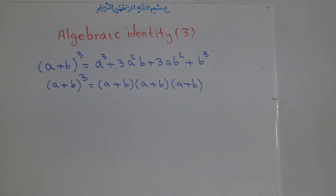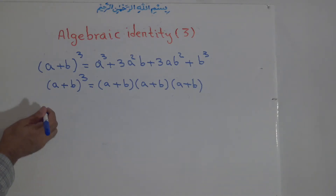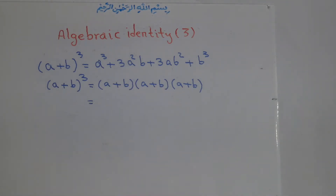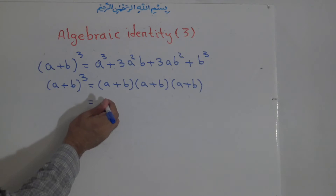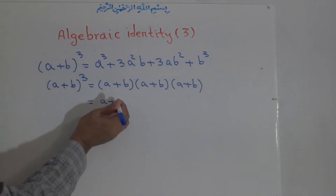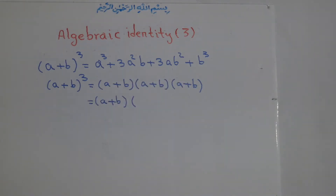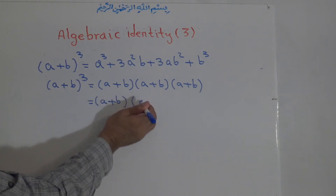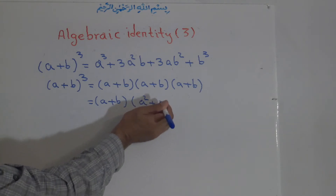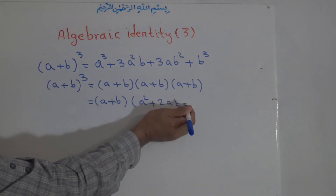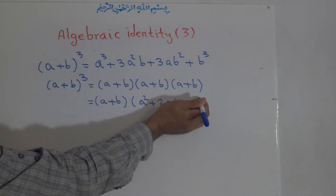So for the power of 3, we multiply (a + b) three times. We know that (a + b) times (a + b) from the first identity is (a + b) squared, which equals a squared plus 2ab plus b squared.